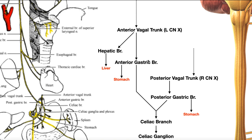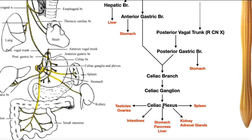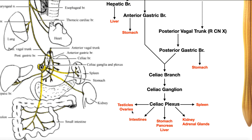Looking at these two gastric branches, the anterior and the posterior, they come together and contribute to what we call a celiac branch. The celiac branch continues down to an enlargement called the celiac ganglion, which then forms what we call a celiac plexus. The celiac plexus gives rise to a bunch of other plexuses serving individual structures, including the spleen, kidneys, adrenal glands (also called suprarenal glands), stomach, pancreas, and liver. The celiac plexus is the main parasympathetic nerve supply of the liver, though the hepatic branch of the anterior vagal trunk also supplies it. We also have intestines, and the testicles and ovaries depending on gender. The one supplying the intestines is called the superior mesenteric plexus.